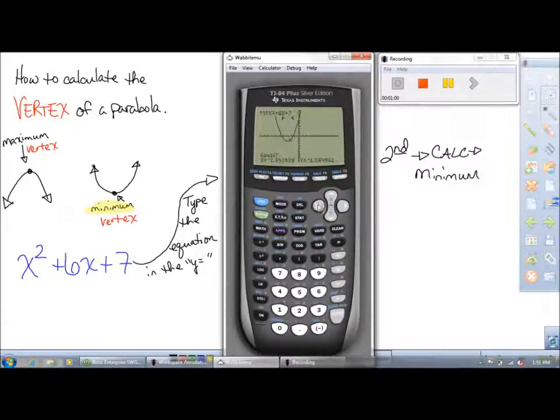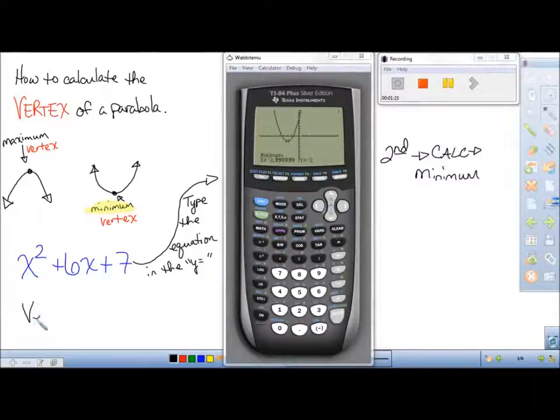Then it's going to ask you to take a guess and it's going to regress those points down to a point where the calculator believes it's at. It is telling us it is at negative 2.99 repeating, which really means negative three comma negative two, and our vertex is at negative three negative two.